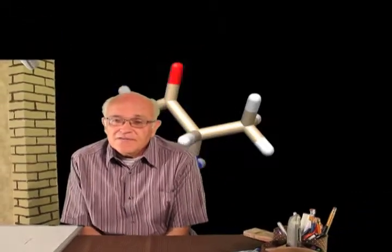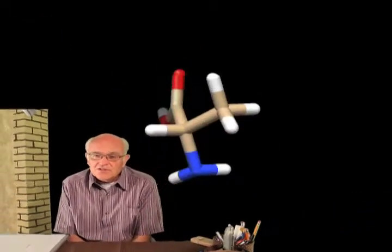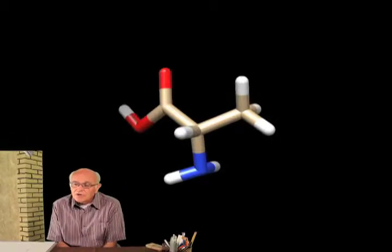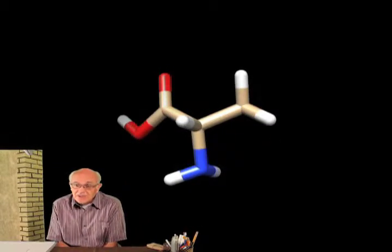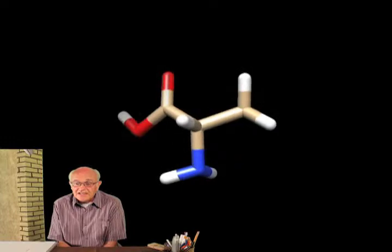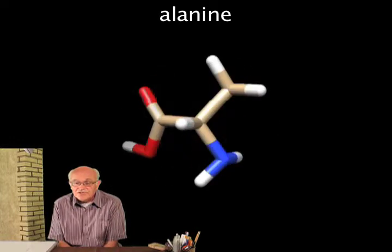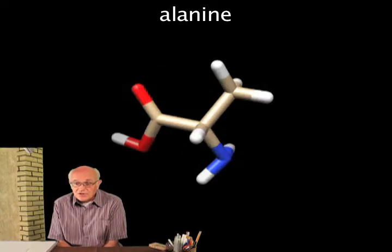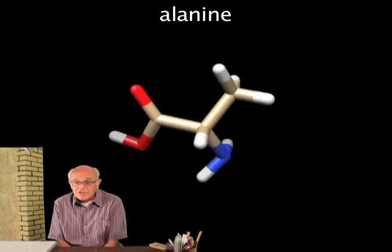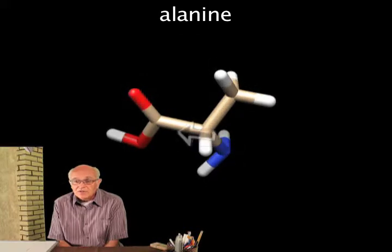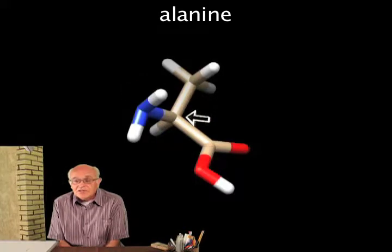Organic chemistry is very much a three-dimensional sort of thing. Carbon has four valence electrons, and those four electrons are normally used in three dimensions — they stick out in three dimensions and form three-dimensional structures. This is a molecule of alanine; you can see the three-dimensional carbon atoms.